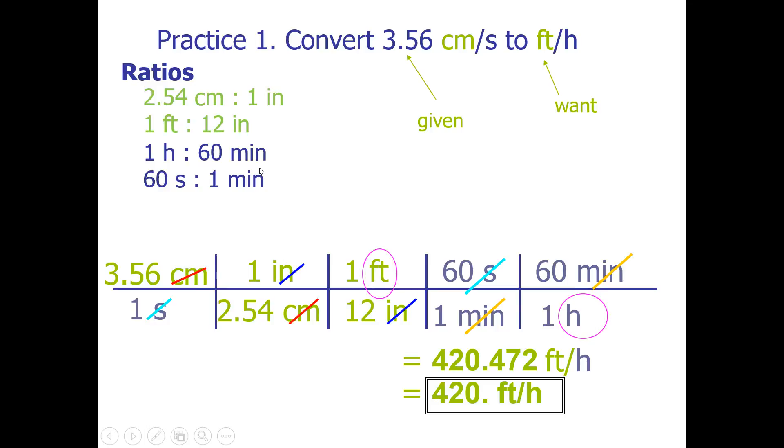The other thing is if you're curious why do units cancel out: units cancel out the same way numbers do. Because centimeters over centimeters, centimeters divided by centimeters is one, and anything times one is itself. Therefore we can easily cancel out units the same way numbers do.